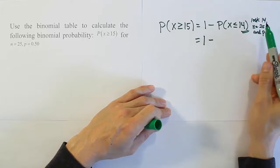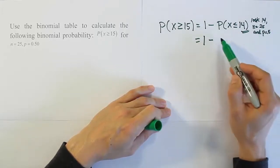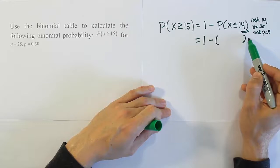That's what we look up on our table in order to find this answer, this probability that we need to do subtraction from 1 with.